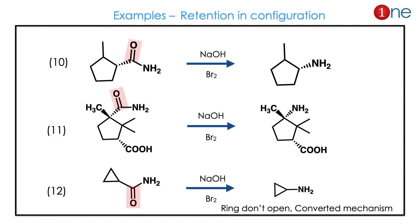The tenth example: the migrating group has a chiral carbon, so the final product is also chiral with no change in configuration. The same applies to the eleventh molecule — it is chiral and retention of configuration gives the amine. For the twelfth, since the mechanism is concerted, the ring is retained even with ring strain; the ring will not open.